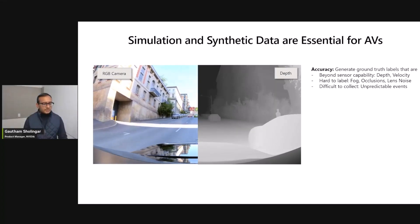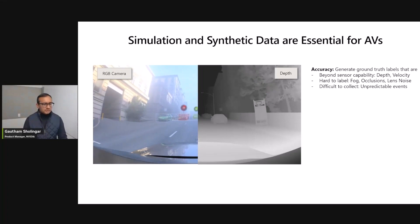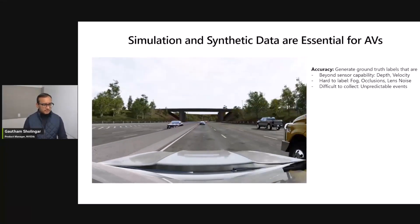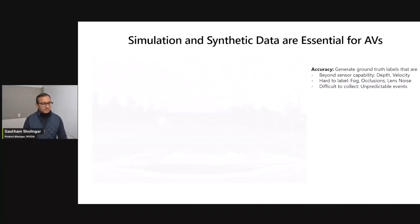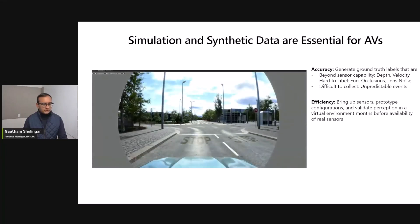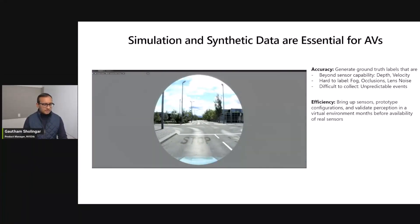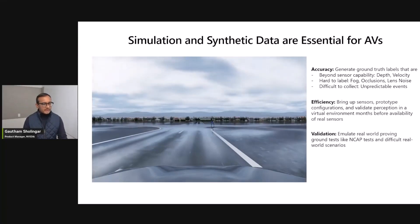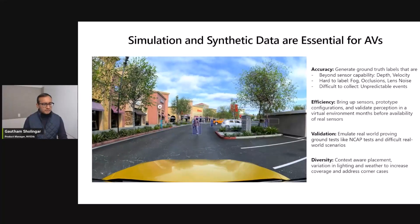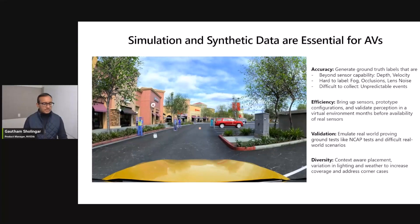Synthetic data sets can generate ground truth labels beyond the sensor's native capability, including depth and velocity, as well as hard-to-label situations including fog, occlusions, and lens noise. Sometimes these events are unpredictable, including cut-ins — for example, a truck cuts off the ego vehicle, forcing it to change lanes. Simulation also improves efficiency: you can bring up sensors, prototype new configurations, and validate perception in a virtual environment months before the availability of real sensors. You can tweak the sensor configuration, change the resolution on cameras, change the field of view, and quickly understand the range of possibilities. You can emulate real-world proving ground tests like NCAP, as well as difficult real-world scenarios in a completely virtual safe proving ground. With context-aware placement and variation in lighting and weather, you can increase coverage and address corner cases. Simulation and synthetic data sets have the ability to amplify the amount of diversity in your data.